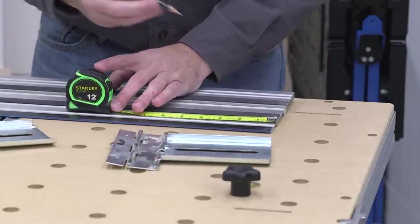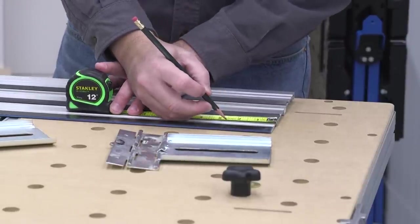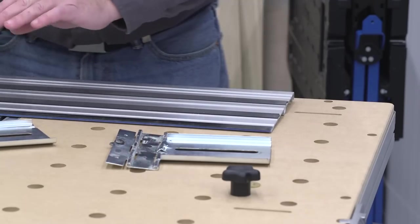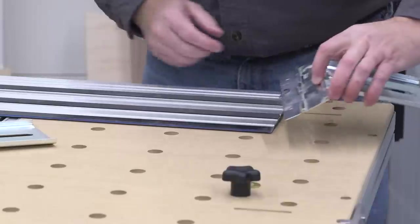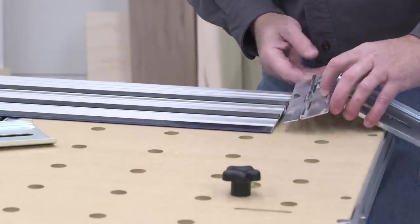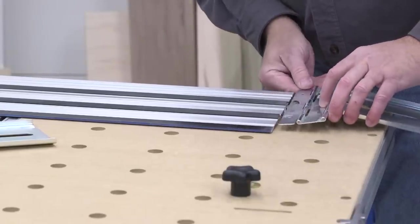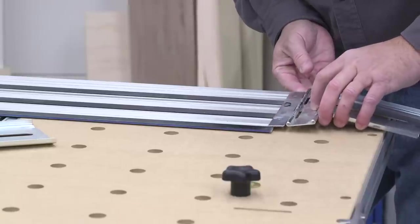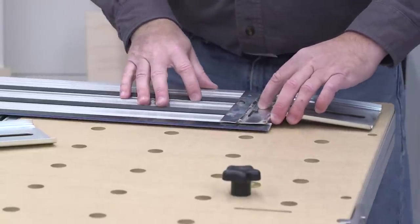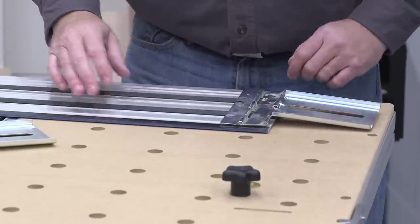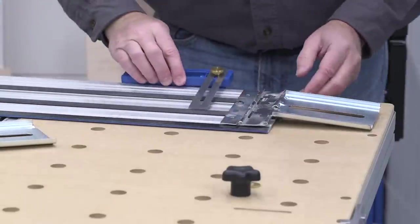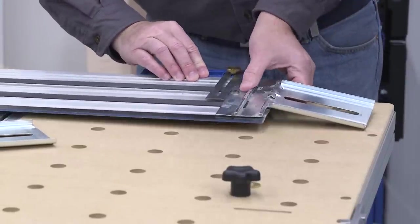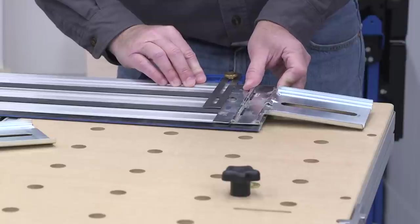At the end of the track that's under your left hand, measure two and a half inches from the end of the track, and then make a mark. Now, slide one hinge onto the track. Notice that the hinge knuckles are facing up. You want the hinge to be square to the track edge. So, use a square to position the hinge on your mark, and then tighten it down using the included hex wrench.